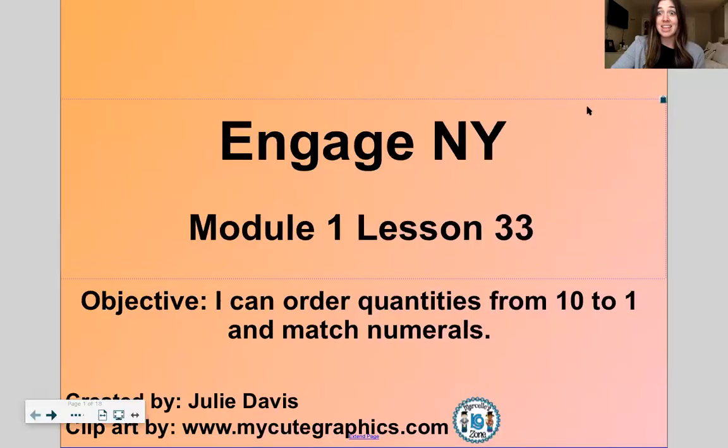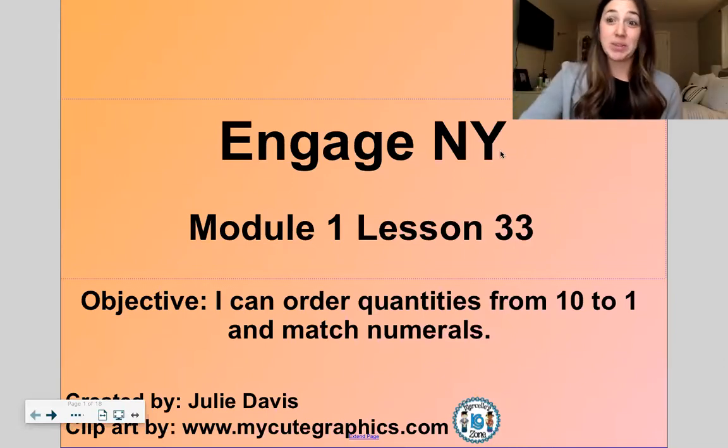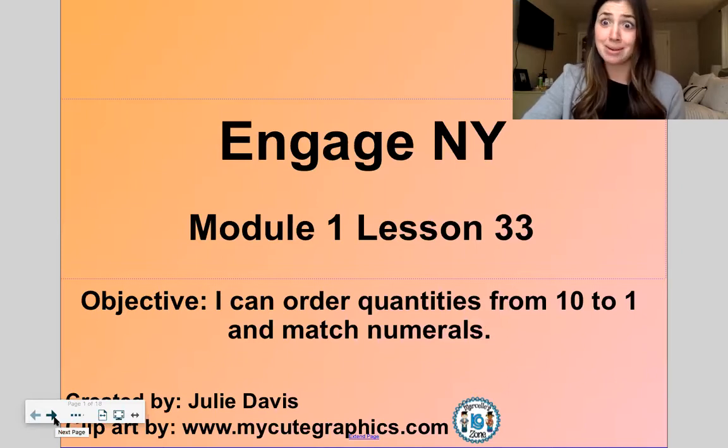Today we are going to work on counting numbers one through ten and then putting them, matching them up with a dot card and matching them with their correct number. So this is a game that I think you guys will have a lot of fun with. Our goal today is to order quantities from ten to one and match numbers. This will be a good one and we'll work on number identification too.